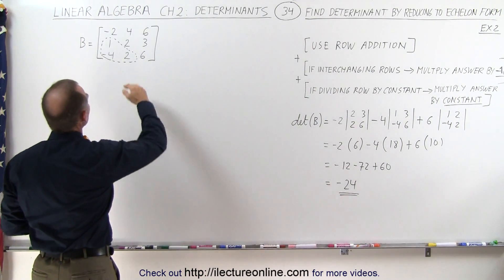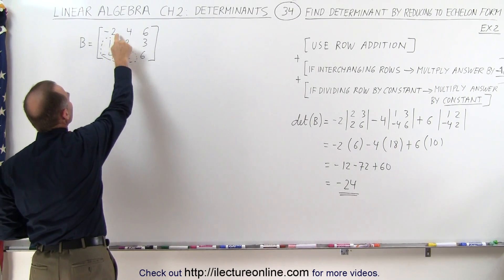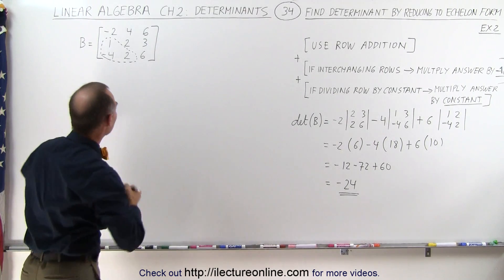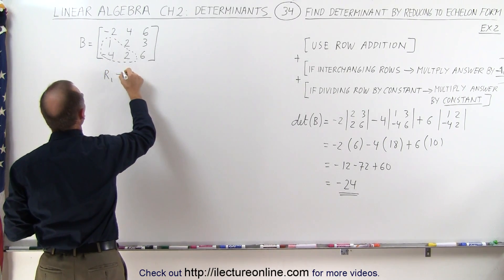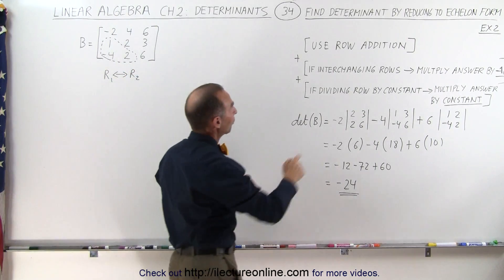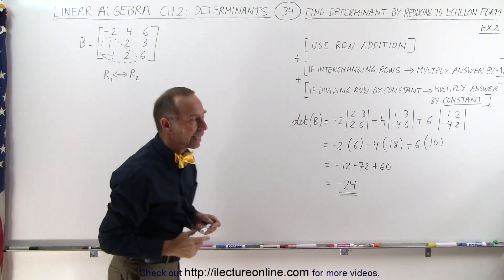The first thing I would like to do is interchange row 1 and row 2, because I have a 1 here, and it is advantageous to have a 1 in the upper left corner, so let's go ahead and do that. The first thing we're going to do is interchange row 1 and row 2. Remember, when we do that, if we interchange rows at the end, we're going to have to multiply the answer by negative 1.